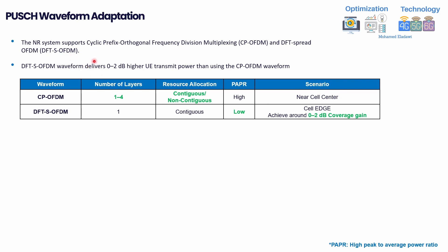CP-OFDM is more recommended in the cell center. By default, only CP-OFDM is working; DFT-s-OFDM is not. If you activate DFT-s-OFDM, it provides some coverage benefits because it only supports contiguous resource allocation, which reduces the PAPR. This can improve cell-edge user coverage by around 2 dB — a gain value referenced from 3GPP. Once you activate the feature, you need to confirm whether it's taking effect, which may not be immediately visible from KPIs alone.